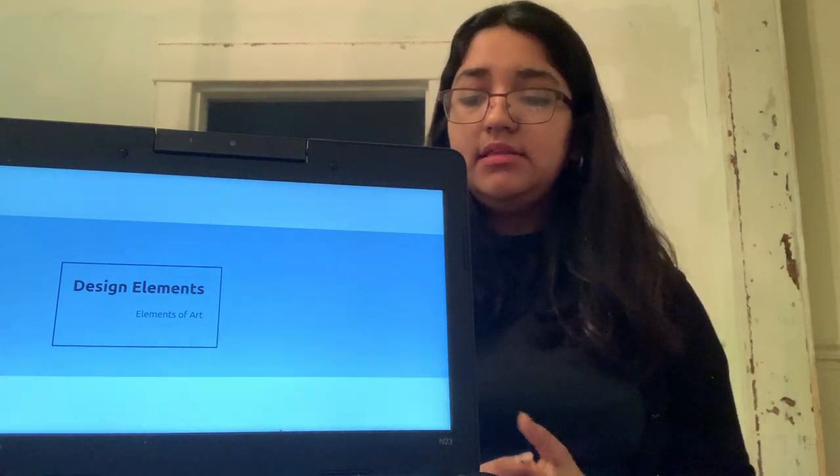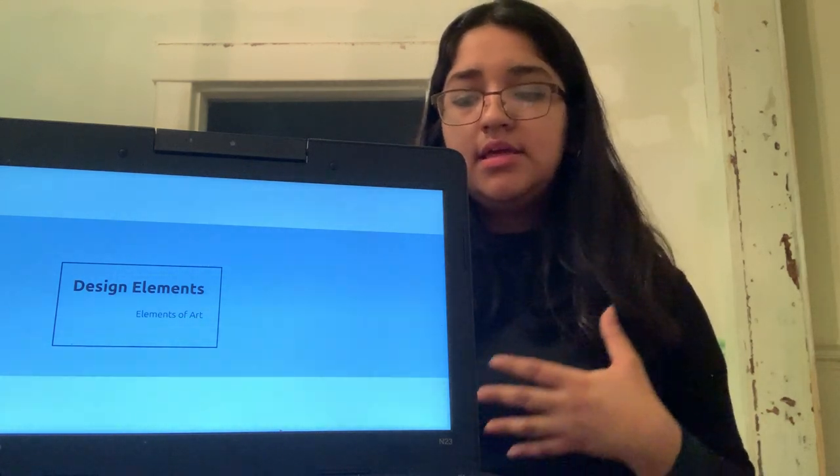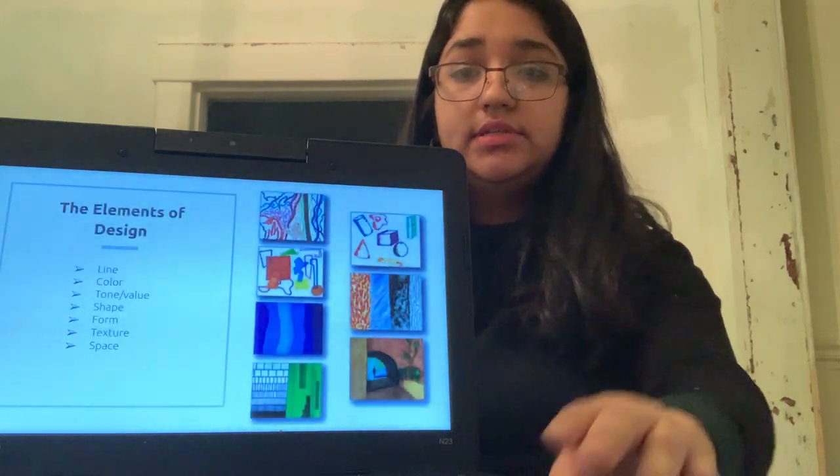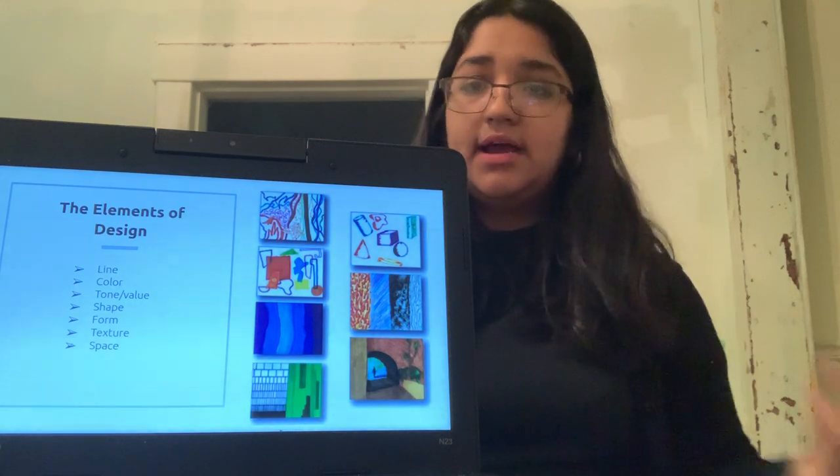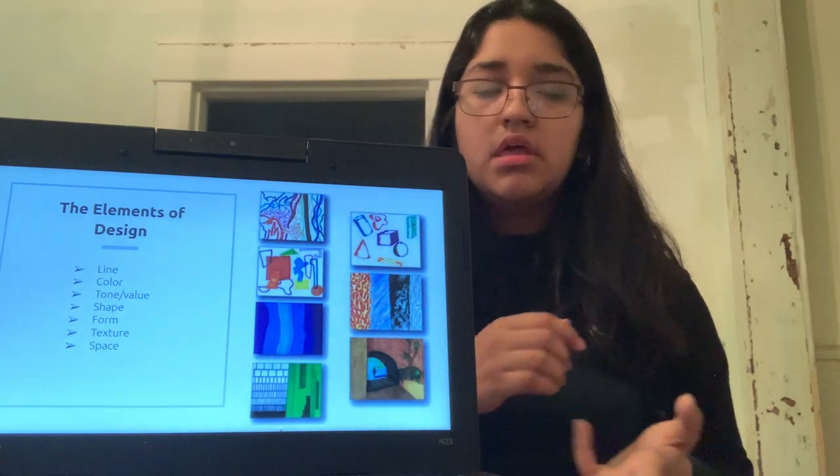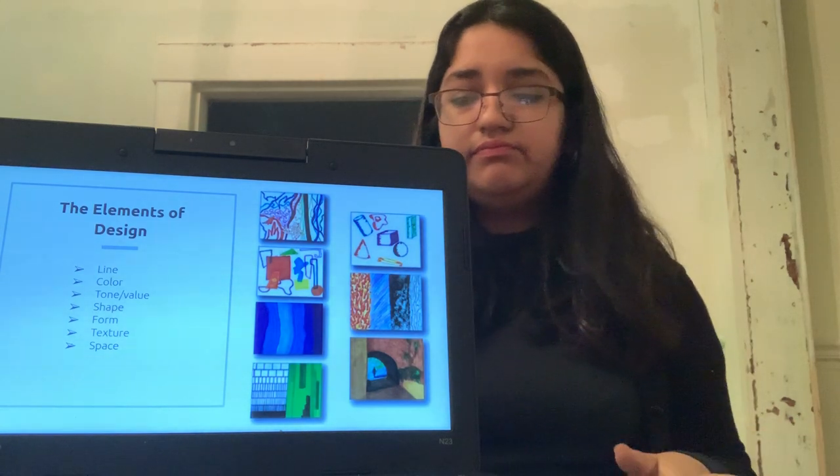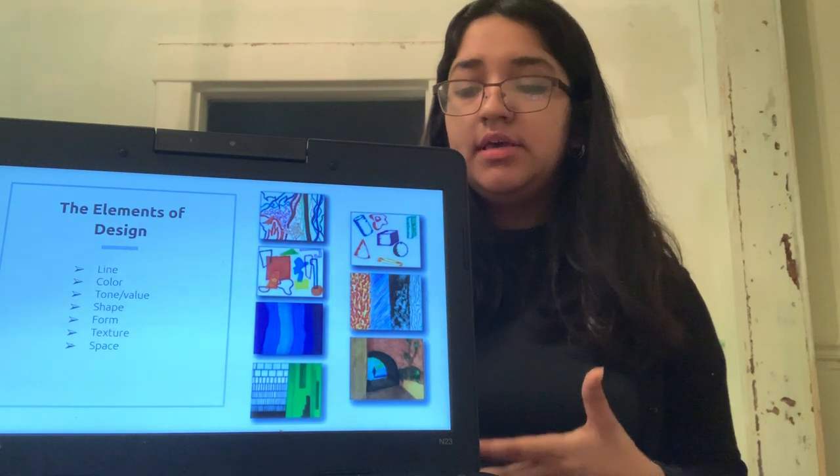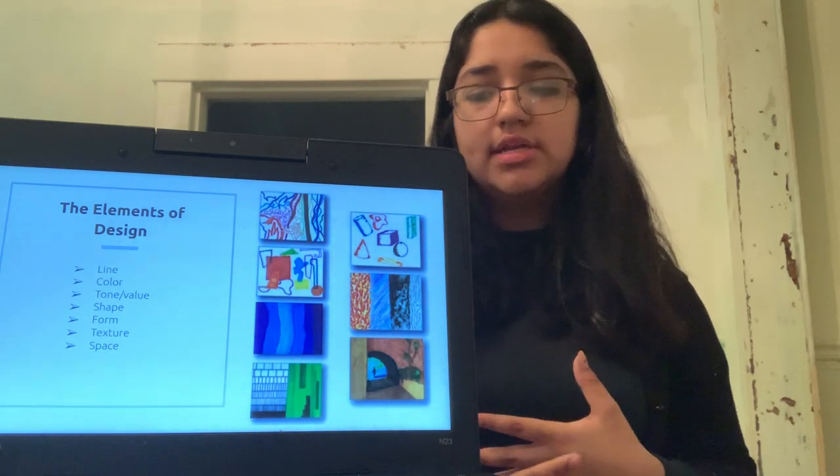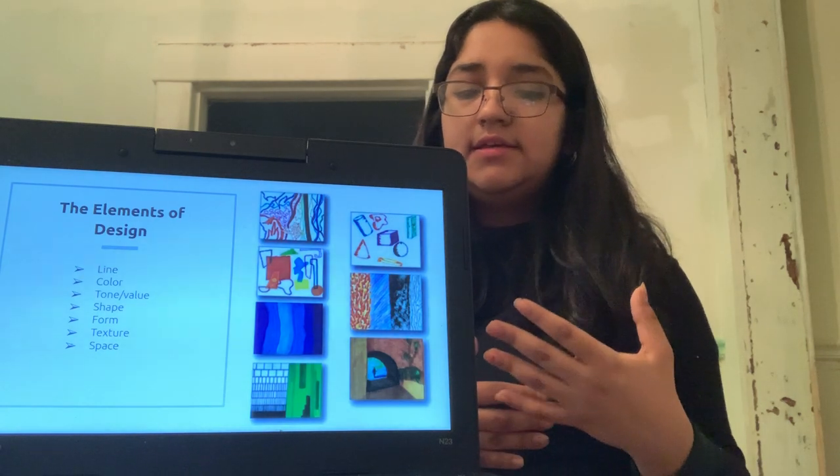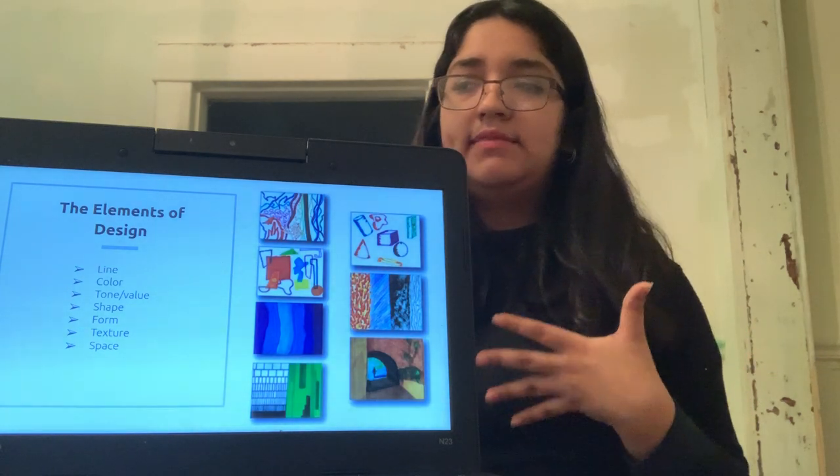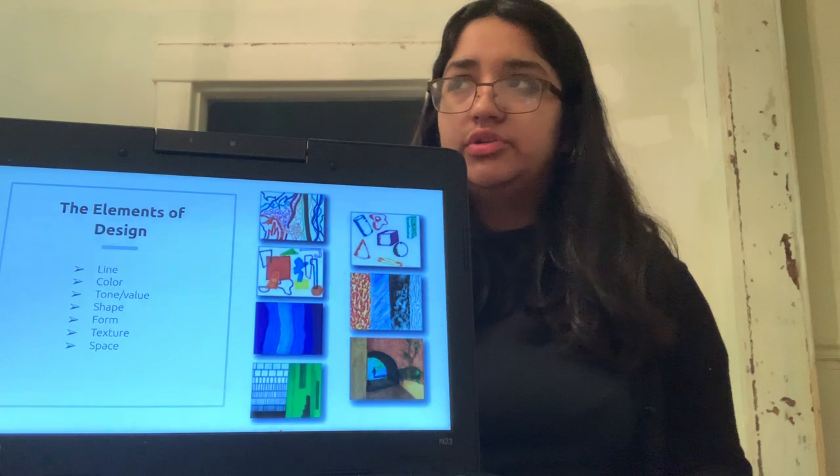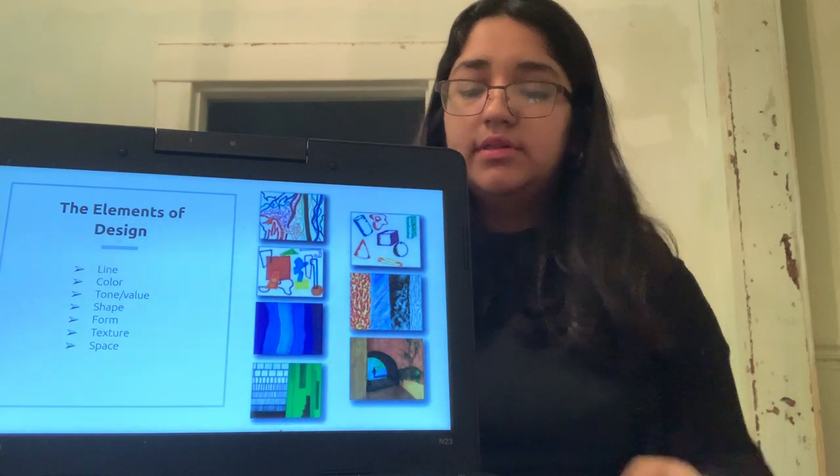The design elements are going to be used as a reference to see all the ways you can manipulate them to create different emotions. The elements are lines, colors, tones, values, forms, shapes, textures, and space. Those are the ones that we're going to be talking about. And they express different qualities that are rhythm, depth, harmony, contrast, growth, structure, and emotion, most importantly.